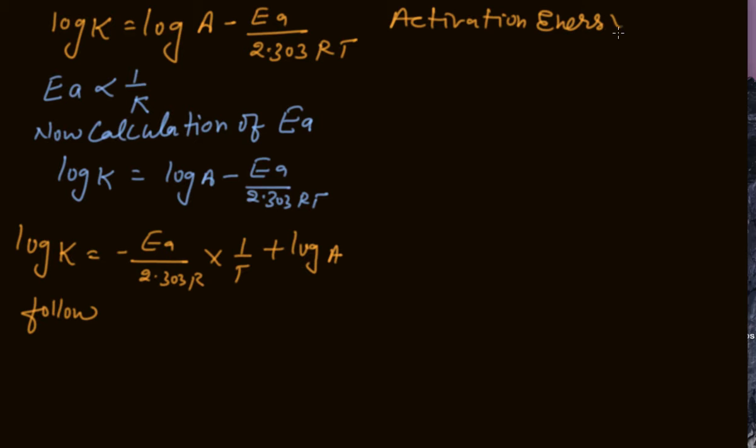You see this one: log K equals log A minus Ea upon 2.303 RT we have done. Here it is clear that as Ea increases, the value of K decreases.